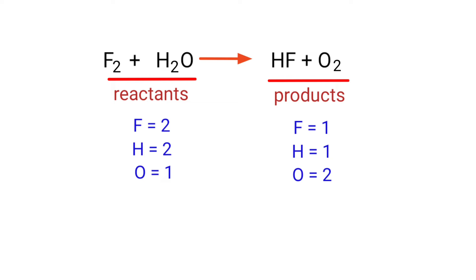The number of atoms are not balanced on both sides. To balance the chemical equation we need to make use of coefficients. A coefficient is a number that we place in front of a chemical formula.